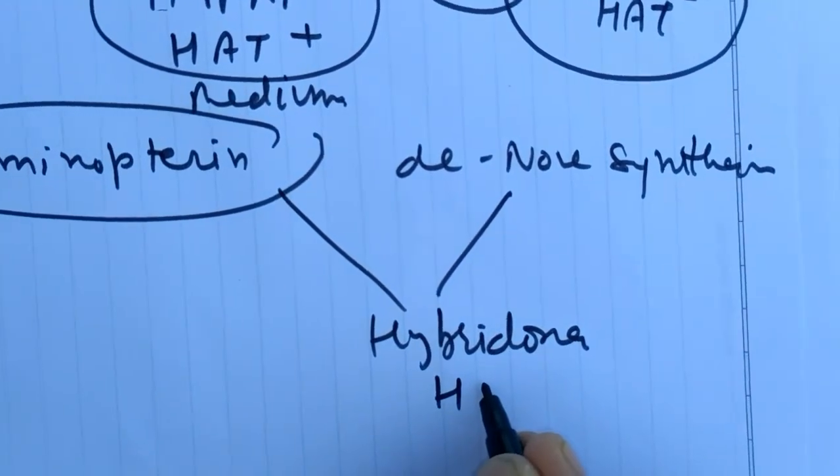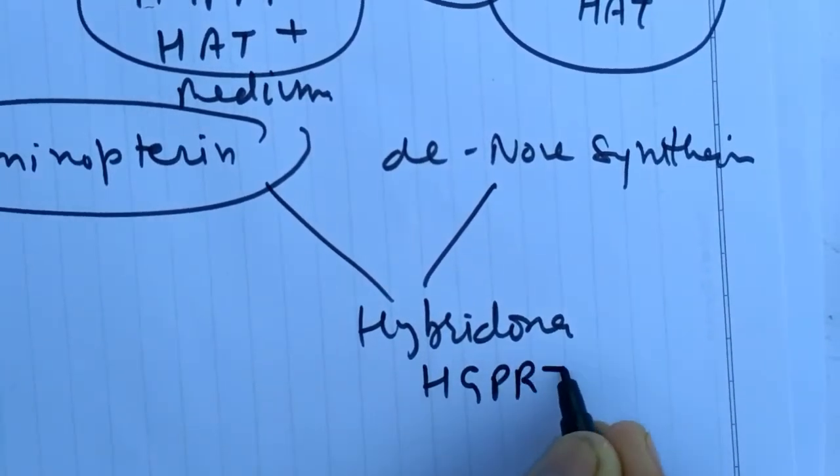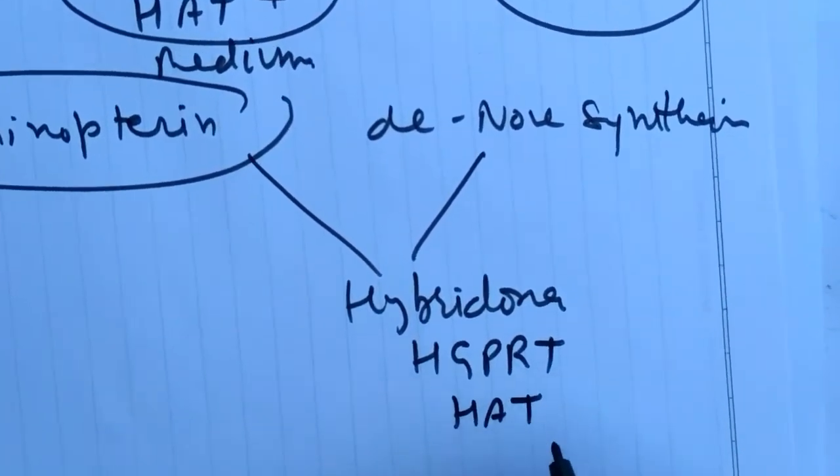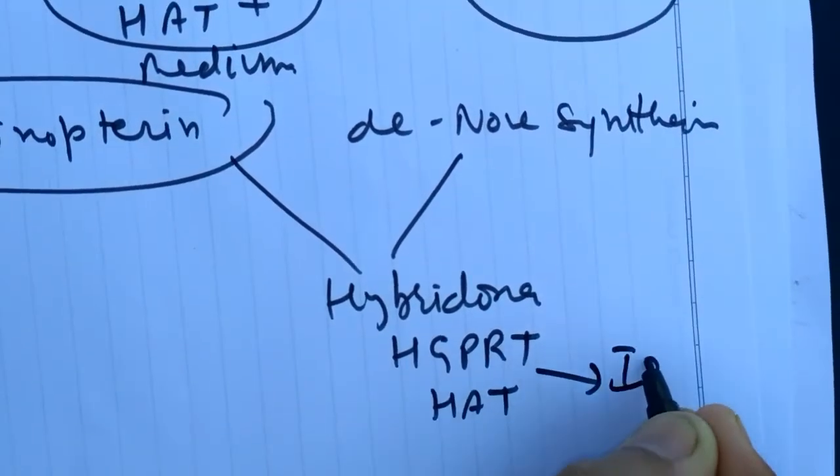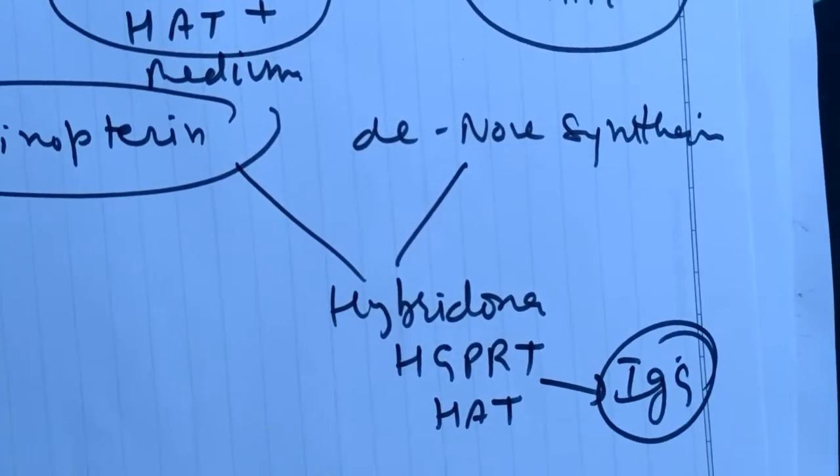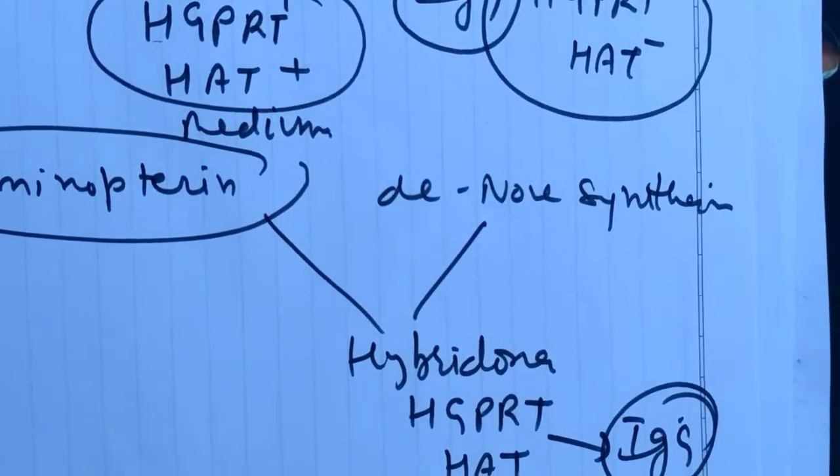It can grow in HGPRT and it will produce only one type of IgG. This is the fact behind the monoclonal antibody technique.